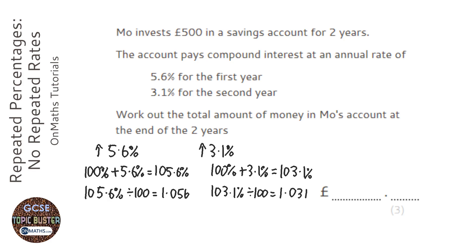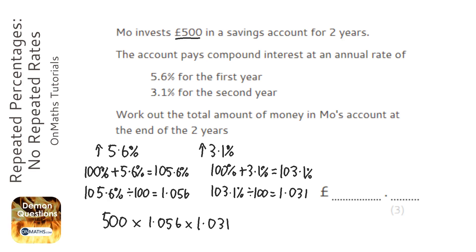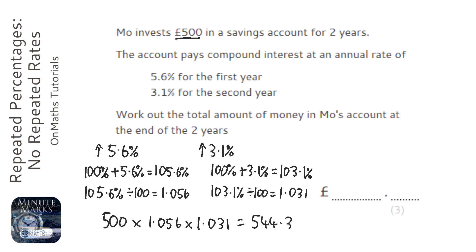With multipliers, you take the amount — which is 500 — times it by the first multiplier, then times it by the second multiplier. So on the calculator: 500 × 1.056 × 1.031, which gives 544.368. With money you need to round, so the answer is £544.37.